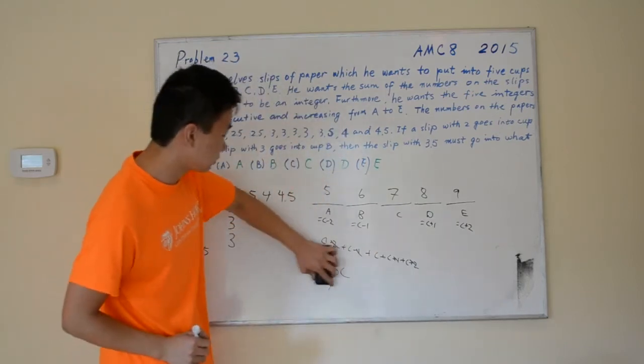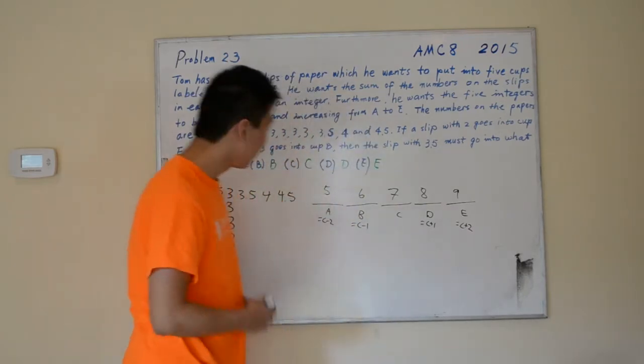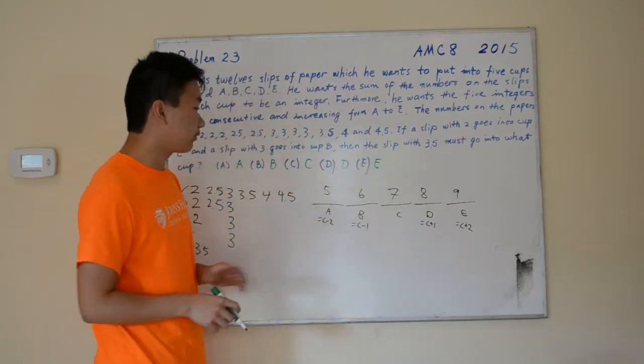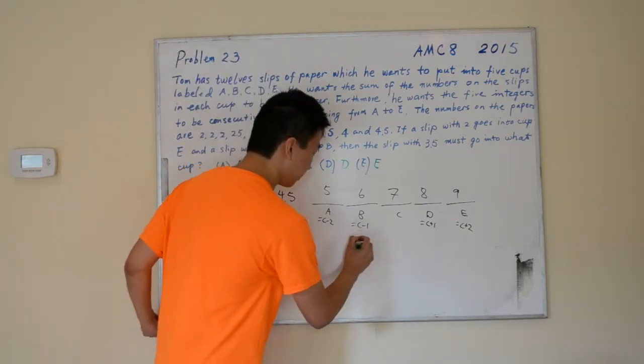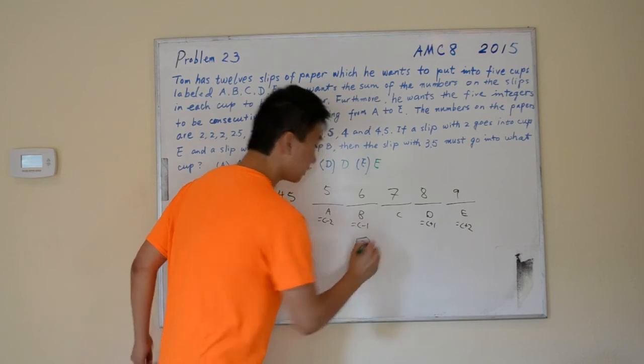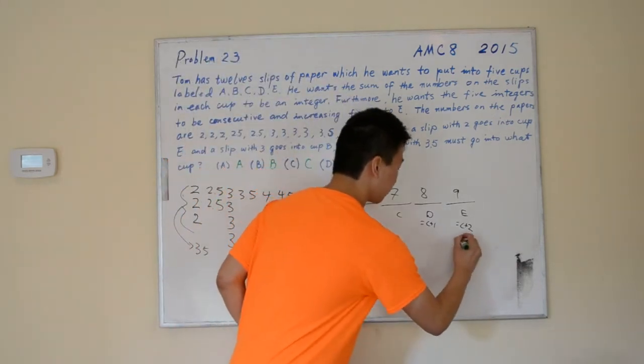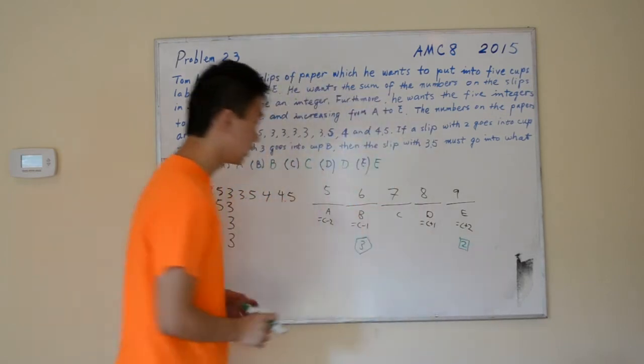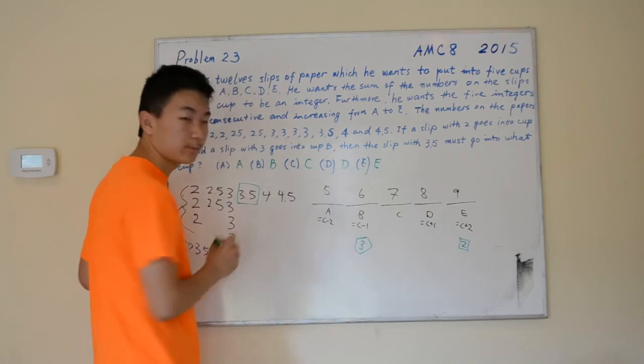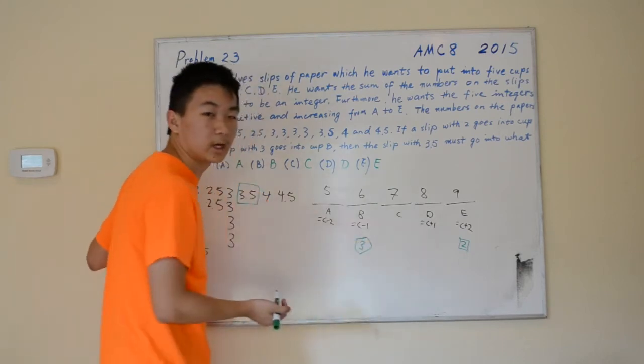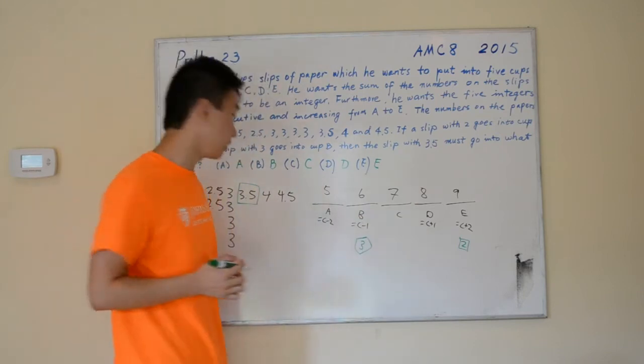So I'm going to erase this right here. We already know that in cup B, there's going to be a slip of paper with number 3 on it, and in cup E, there's going to be a slip of paper with 2 on it. We're wondering, where does this slip with 3.5, which cup will it end up in? Let's just see which one it can end up in.